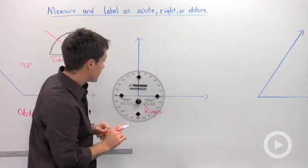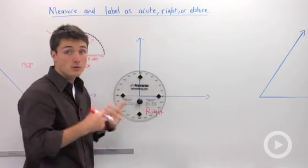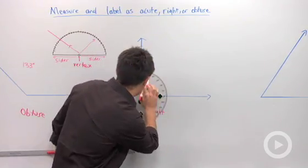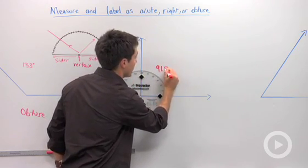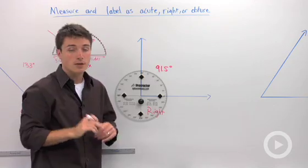And it looks like we have something that's a little bit over 90 degrees, which means that's going to be obtuse. And when I measure it I see that we're going to have about 91.5 degrees.